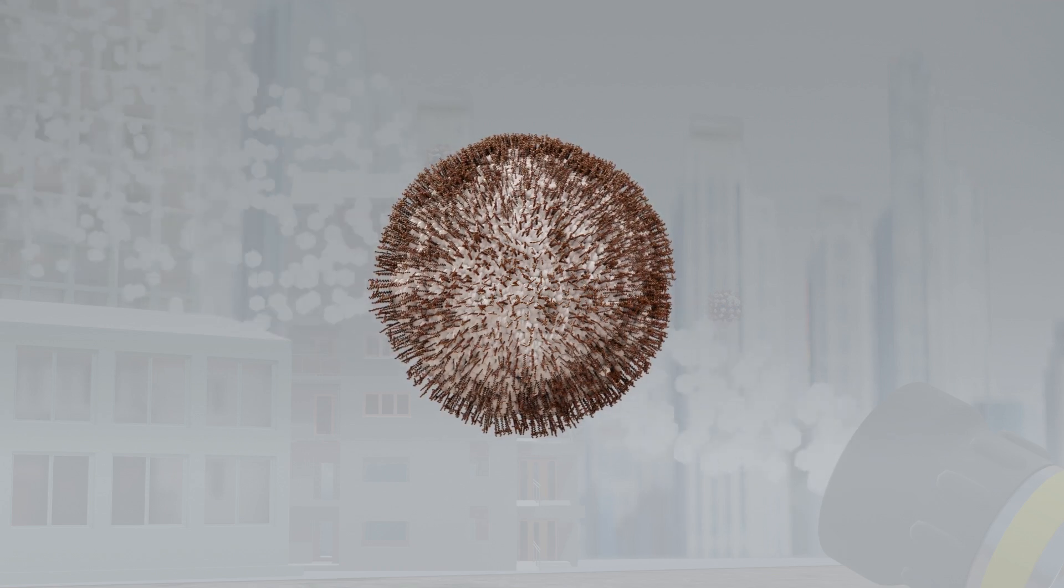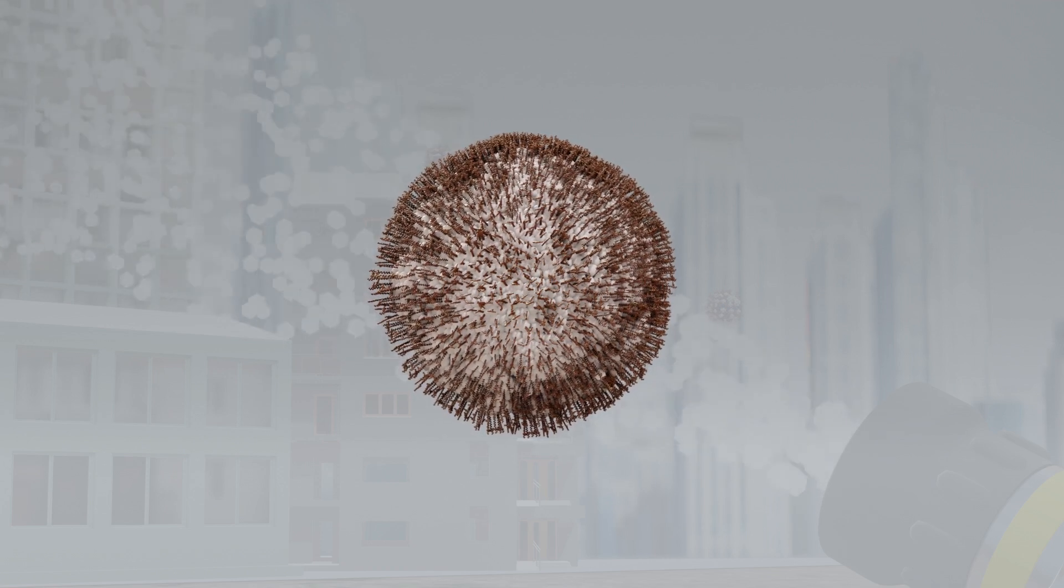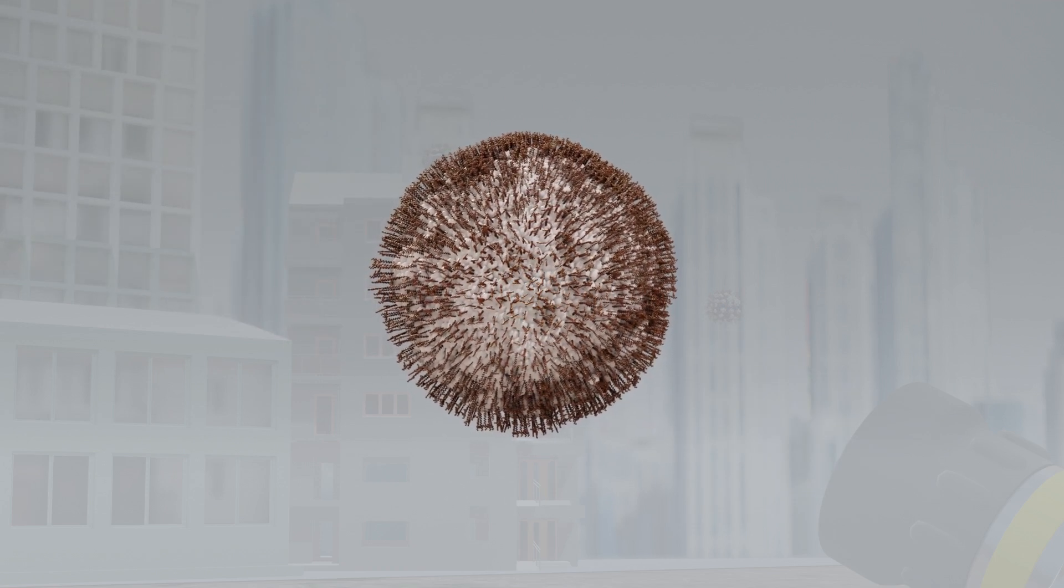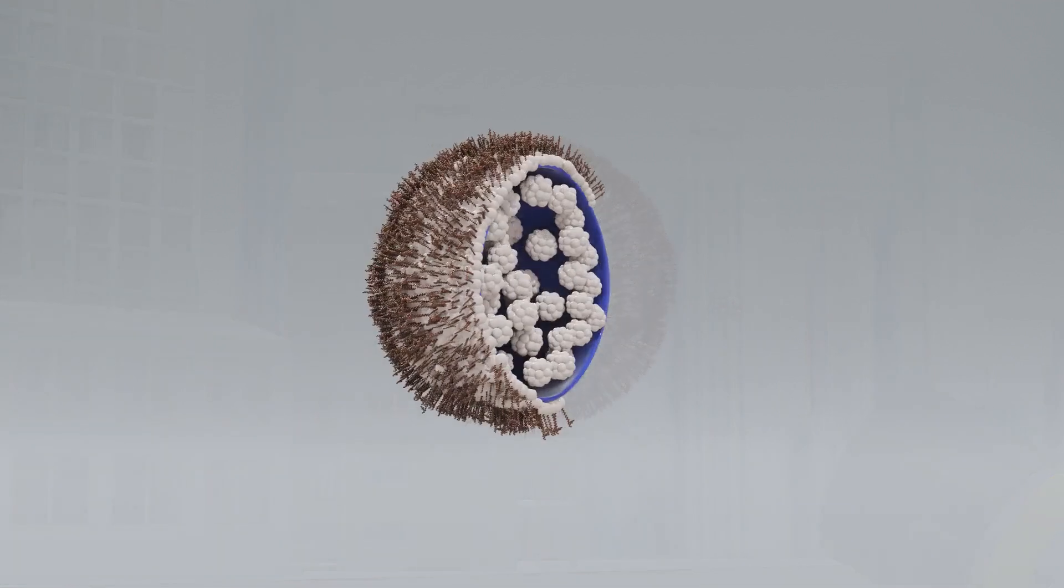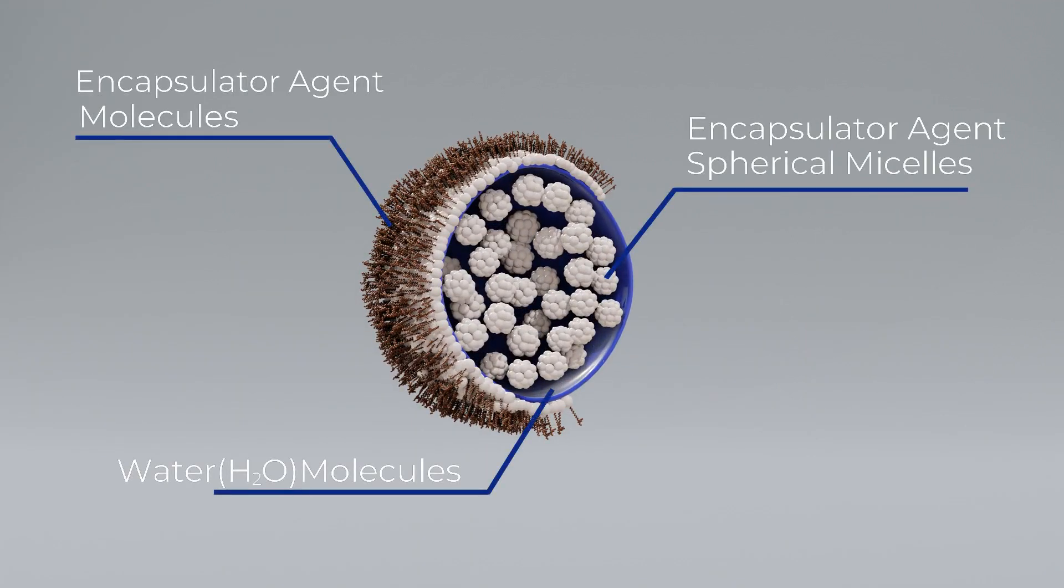The non-polar tails orient outside the droplet with polar heads on the surface forming an EA skin on the surface of every droplet. In addition to the EA skin there are millions of molecular spherical micelles within each droplet.